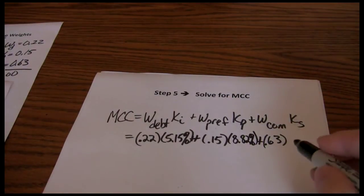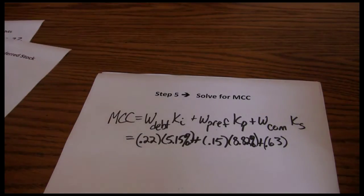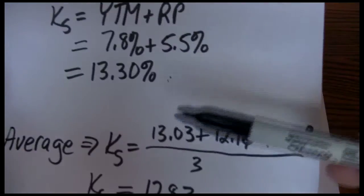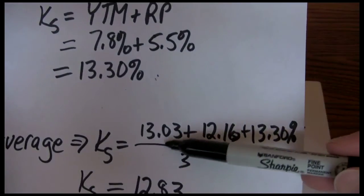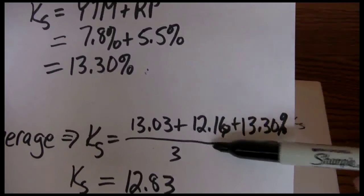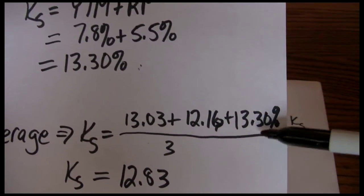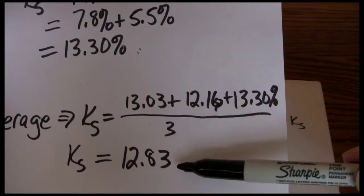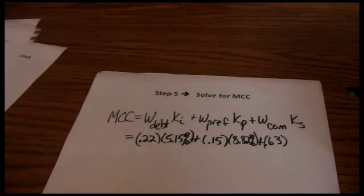Then lastly, we need the cost of common stock financing. We got 13.03% as the cost of common stock financing using the dividend valuation, 12.16 from the security market line, 13.3% from the bond yield plus risk premium, took an average of the three, and came up with 12.83% for our cost of common stock financing.